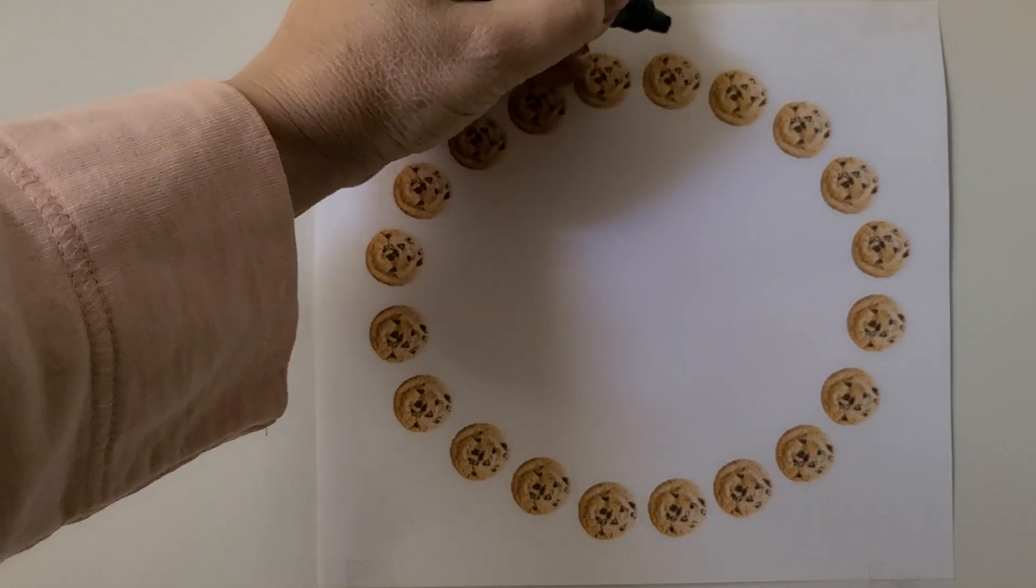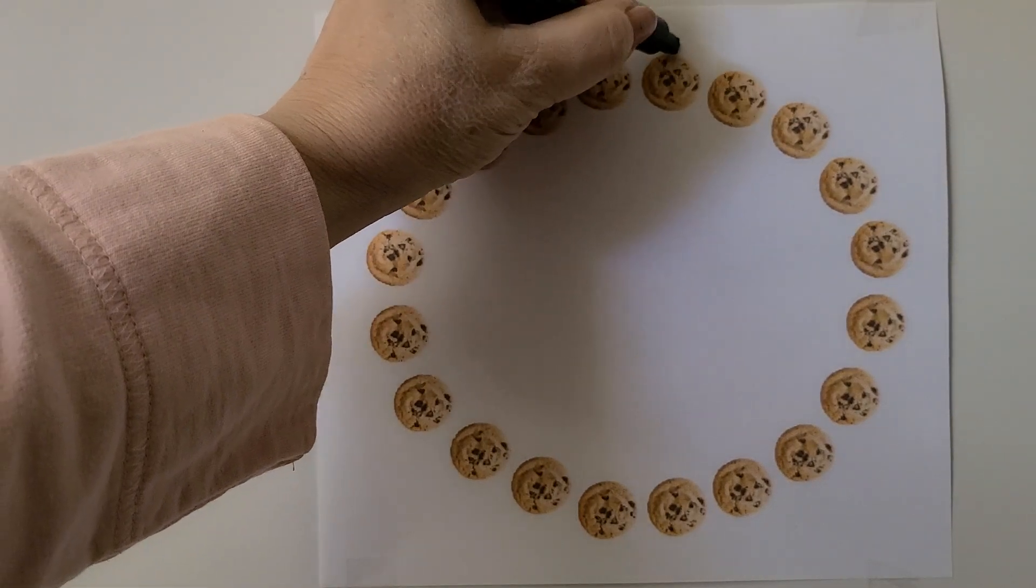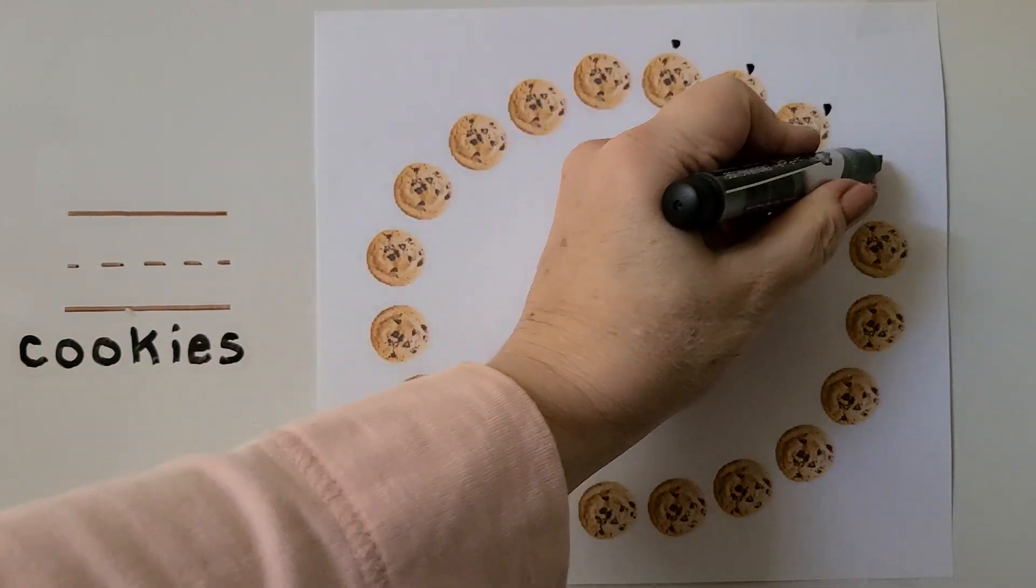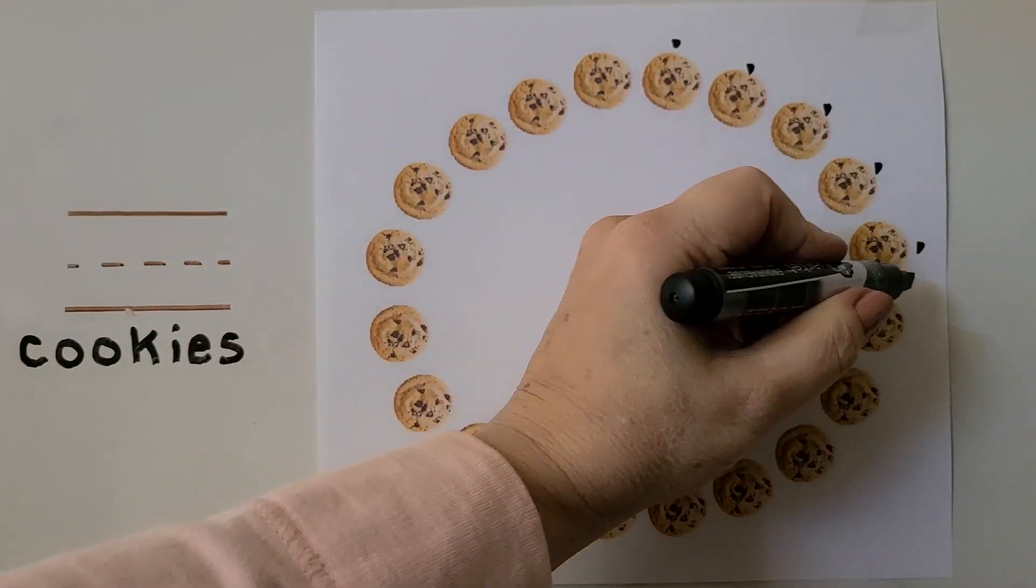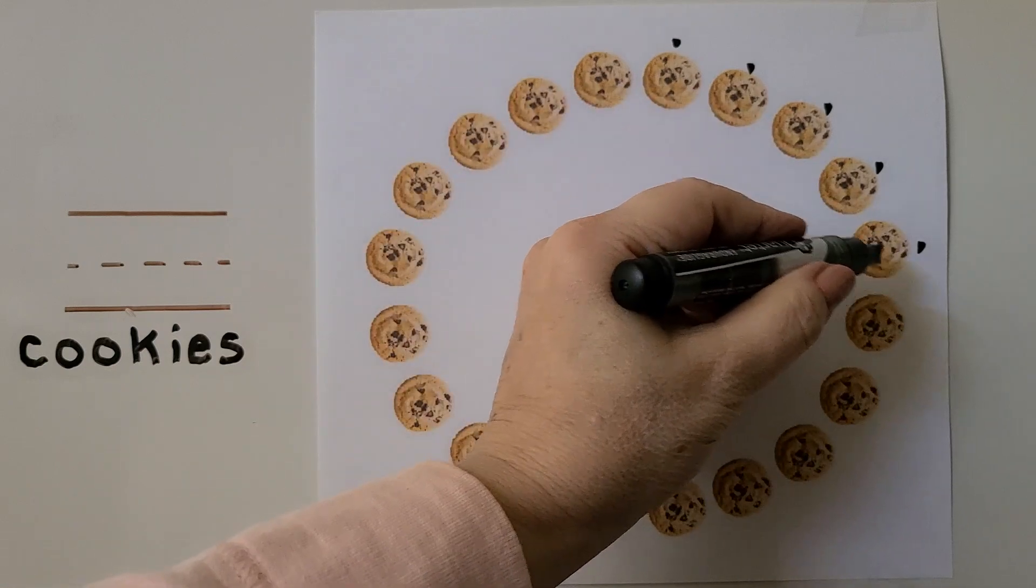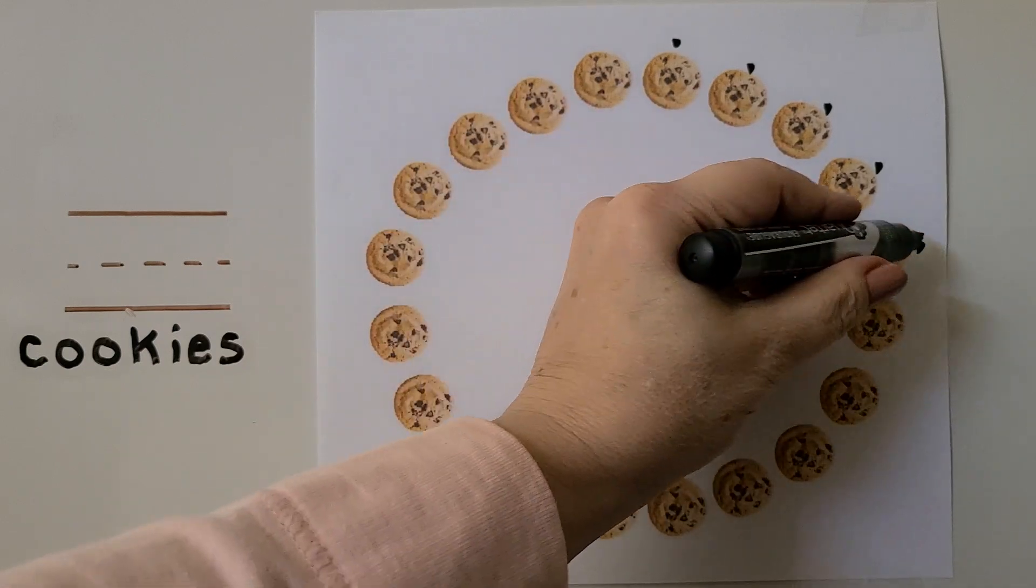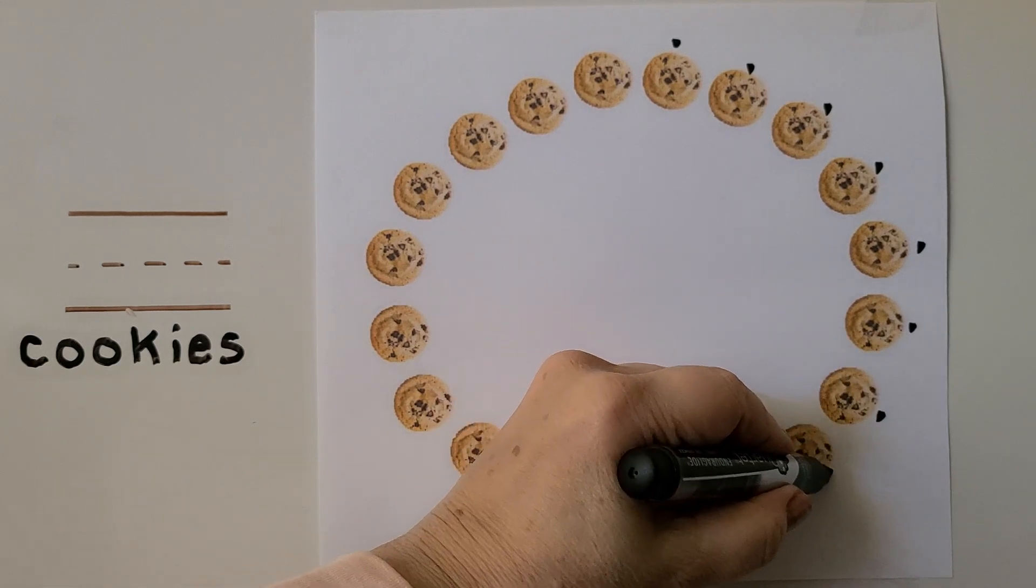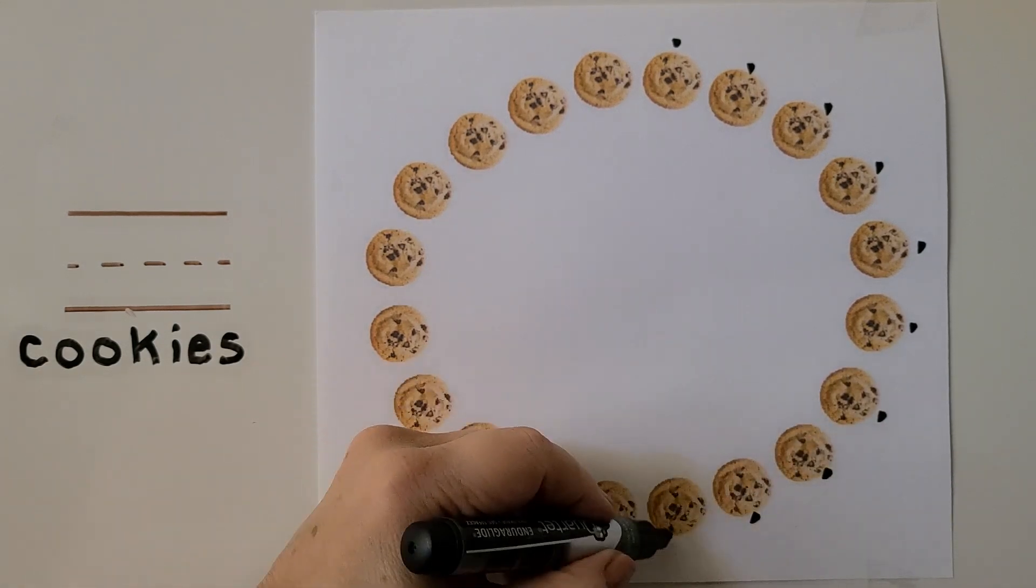We could start at the top right here and that would be 1. So we have 1, 2, 3, 4, 5. We know we counted these because they have a dot next to them. That's 5, 6, 7, 8, 9, 10.